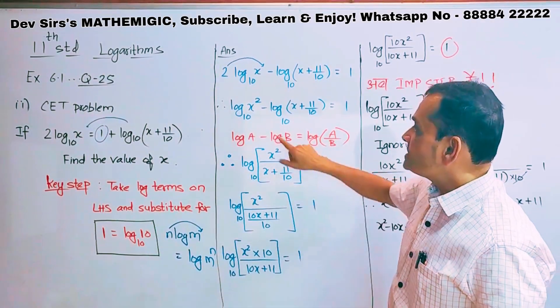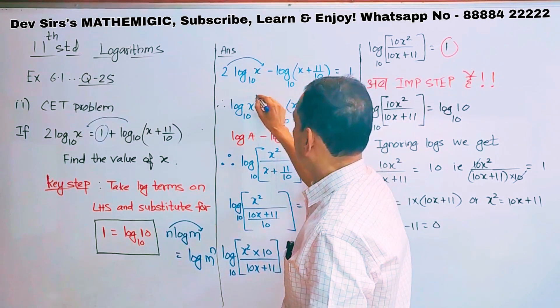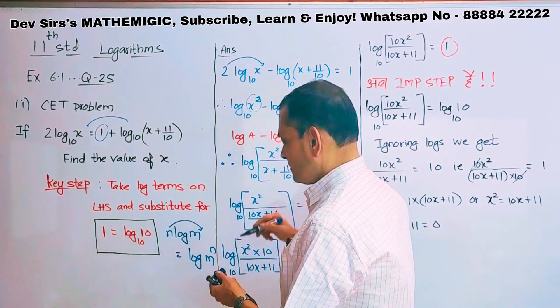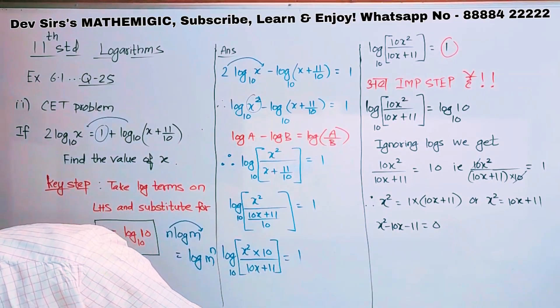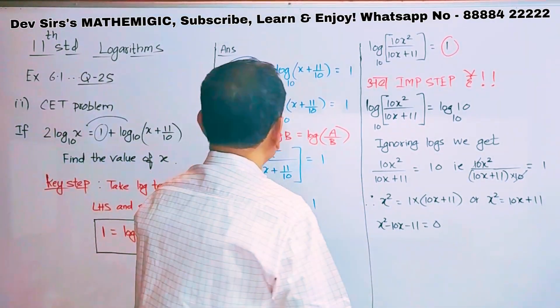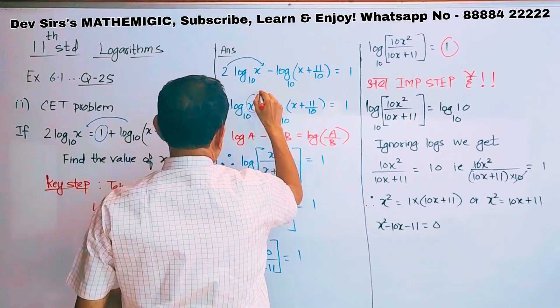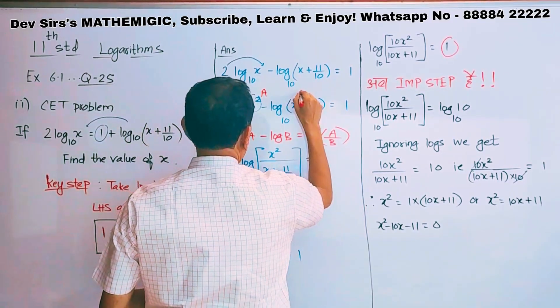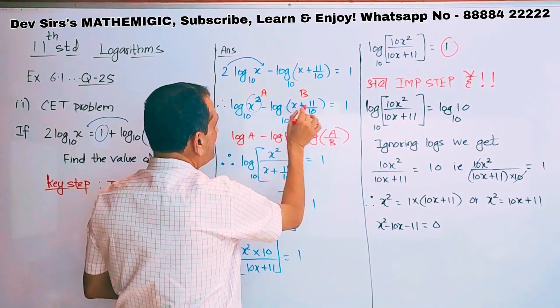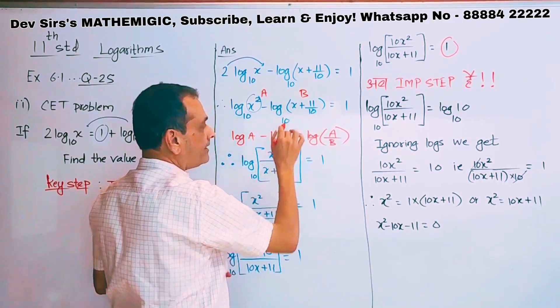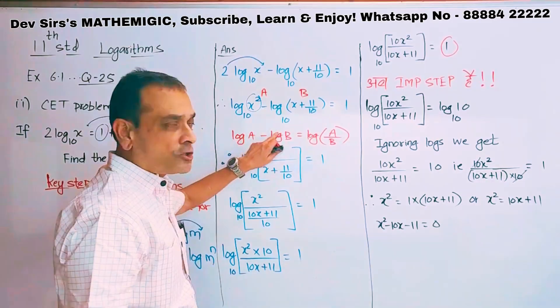After that, 2 goes above, I get log of x squared. Now if you call this as a and this as b, what do you get? Log a minus log b.